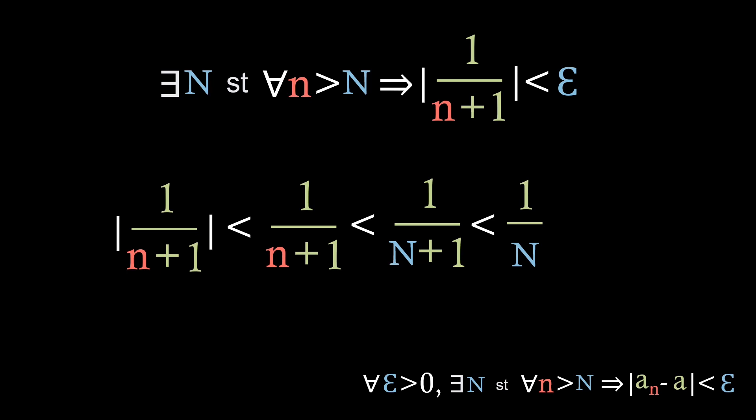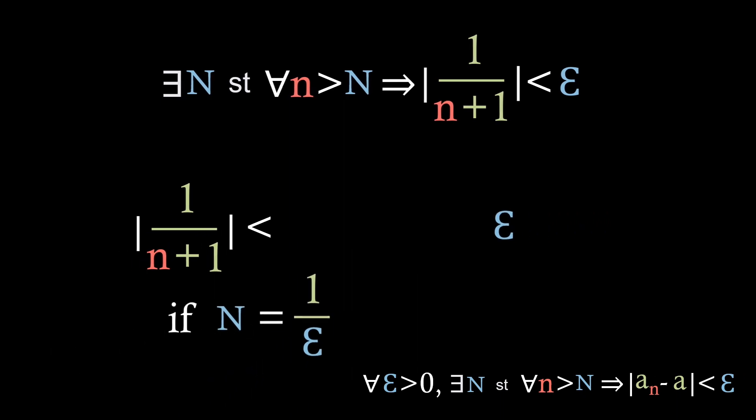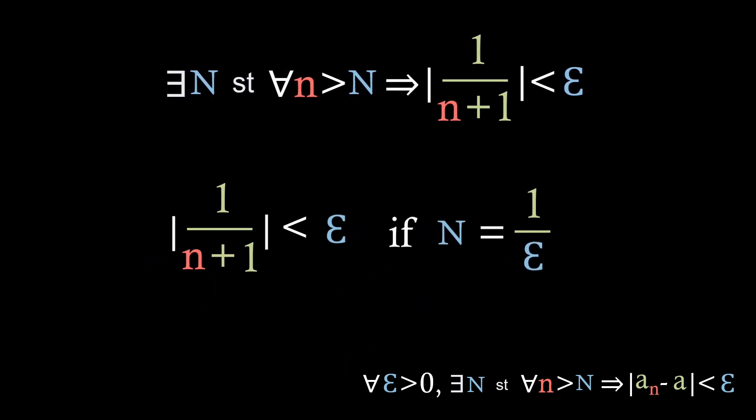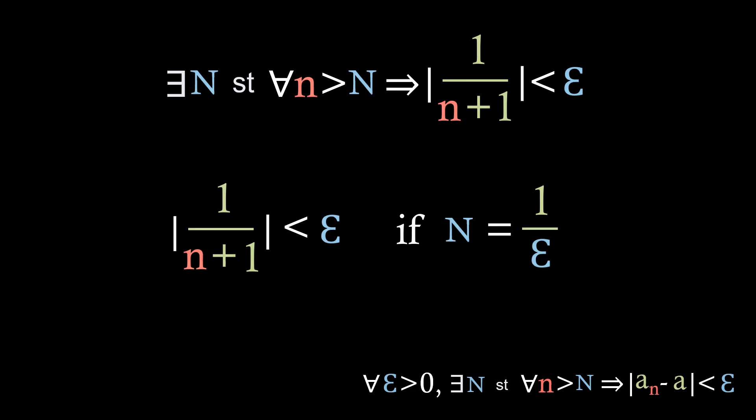Looking back at the top, what we have to do was find a big N such that that second bit of statement holds. Well if we just let big N be equal to 1 over epsilon, we'll see that this last term is actually just equal to epsilon. Now because we've got this chain, we can see that just taking out the middle ones, we have the absolute value of 1 over little n plus 1 is less than epsilon. So now we've actually shown that for all epsilon greater than 0 that there exists this N equals 1 over epsilon such that that final statement holds.